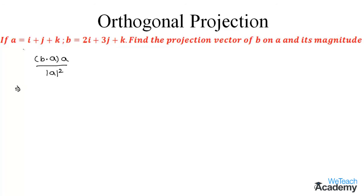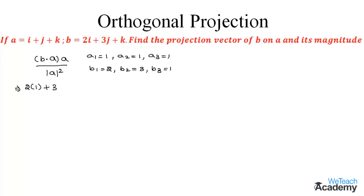We have the values A1 = 1, A2 = 1, and A3 = 1. And the values B1 = 2, B2 = 3, and B3 = 1. We find B · A by multiplying: A1·B1 = 2×1, plus A2·B2 = 3×1, plus A3·B3 = 1×1, times (i + j + k), divided by mod A squared, where mod A = √(1² + 1² + 1²).